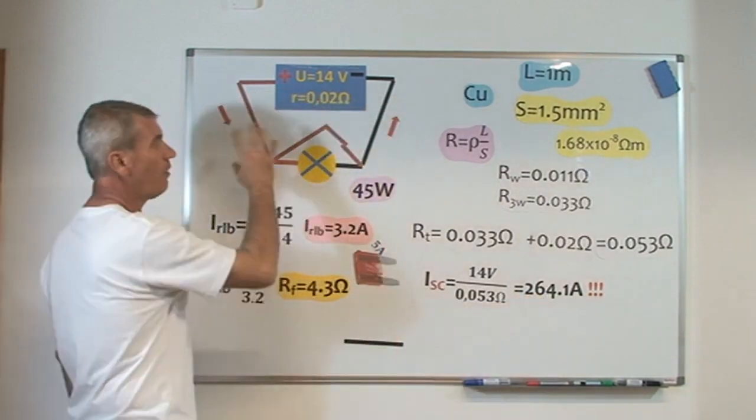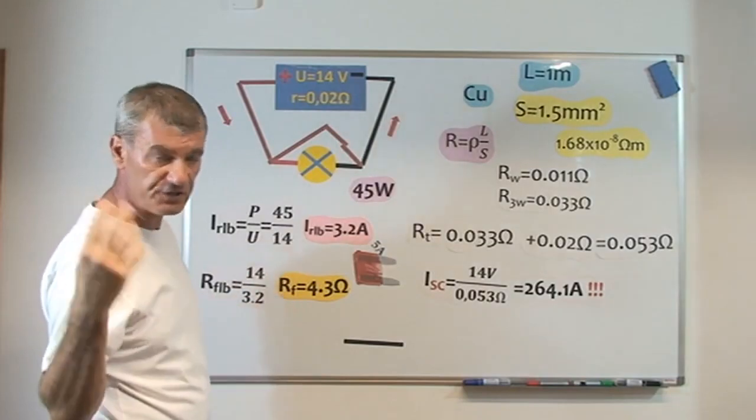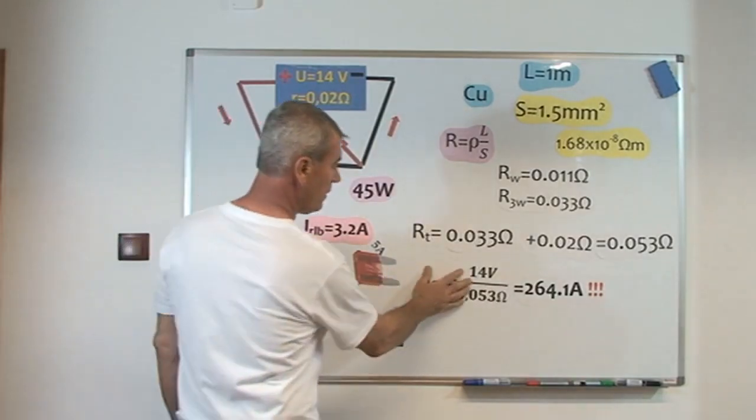At this current, our wires are melting because of thermal effect.